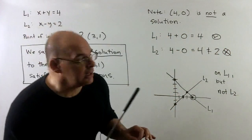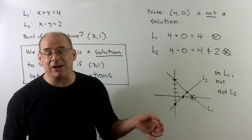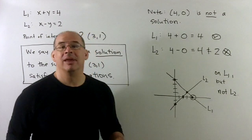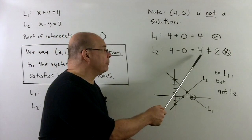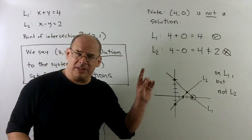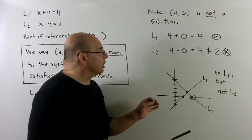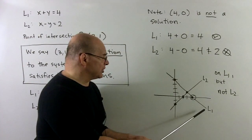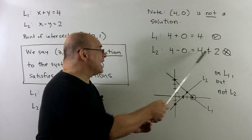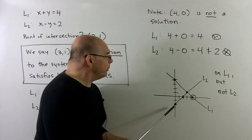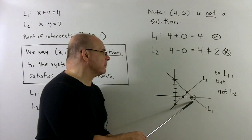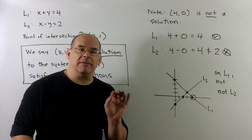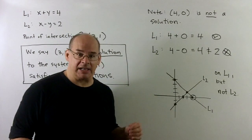On the other hand, take a point like (4,0) — that's not going to be a solution. Checking in our equations: for L1, 4 plus 0 equals 4, that's good. But for L2, 4 minus 0 equals 4, which is not equal to 2 — so that's bad. Looking at the picture, the first equation says (4,0) is on L1, since we found it as an intercept. But not solving L2 means (4,0) is not on L2. Checking both equations is very important when verifying your work once we get some technique going.